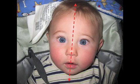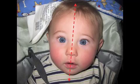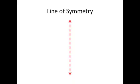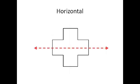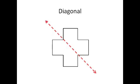A shape has line symmetry when one half of it is the mirror image of the other half. The fold line or mirror line is called the line of symmetry. The line may appear vertically, horizontally, or diagonally.